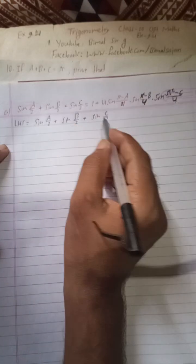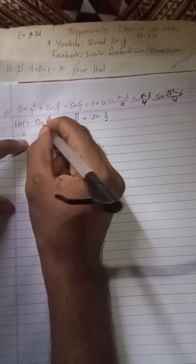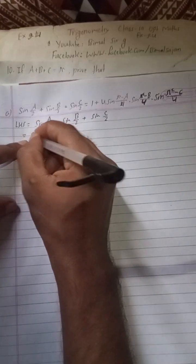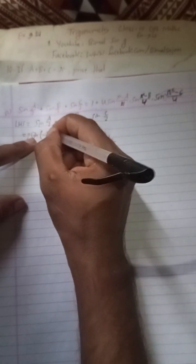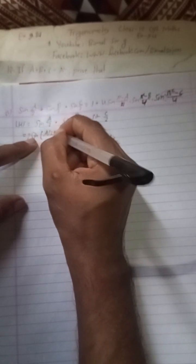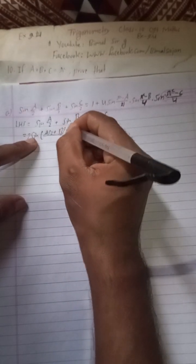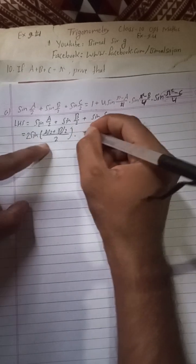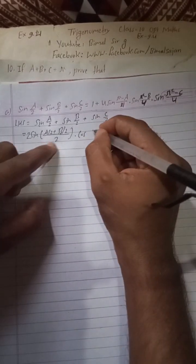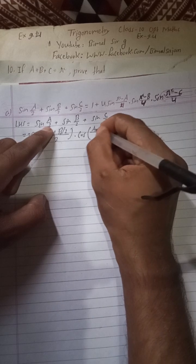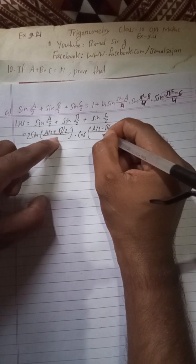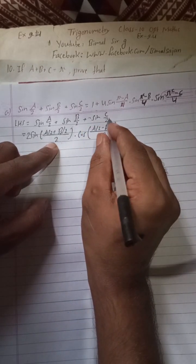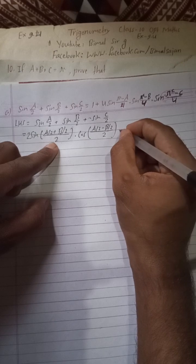This is the LHS part I have taken here. Now I am going to apply the sine C plus D formula. So sine C plus D will be 2 sine (C plus D by 2) into cos (C minus D by 2). So this gives 2 sine (A by 2 plus B by 2) into cos (A by 2 minus B by 2), and this is plus sine C by 2.